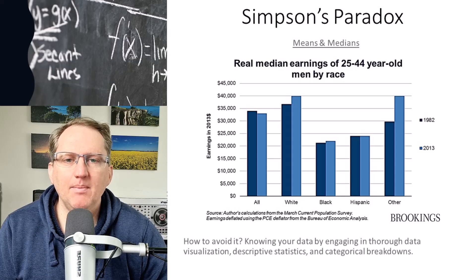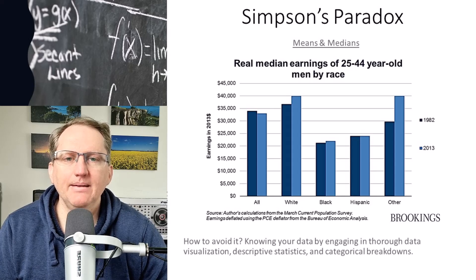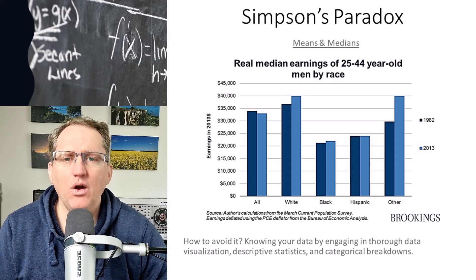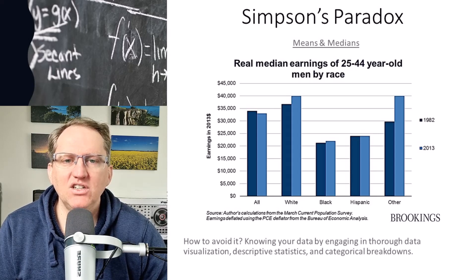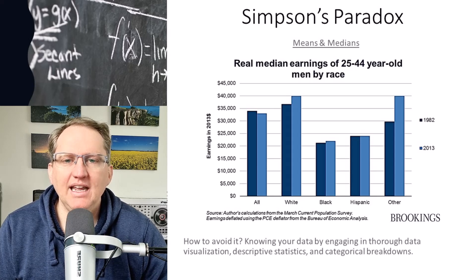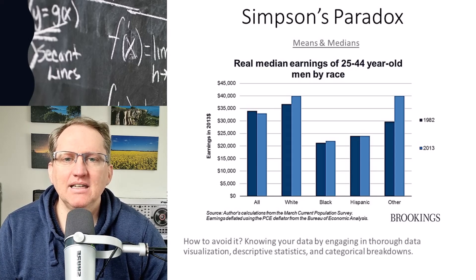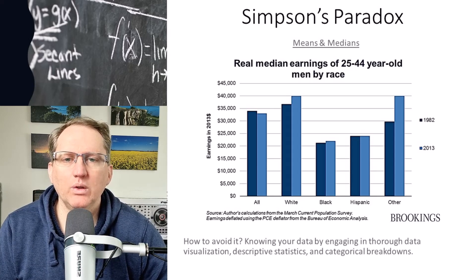In our second example, we have some median salaries there. And we can see that overall there has been a decrease and yet somehow when we look at each of those groups, each of the groups has increased and yet somehow overall there has been a decrease.